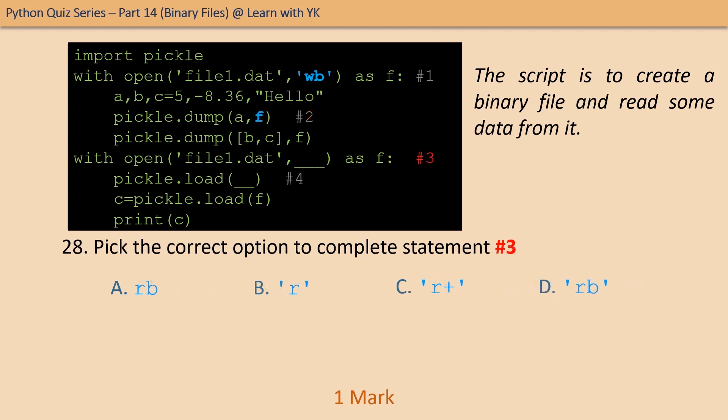Question number twenty-eight: pick the correct option to complete statement number three. The correct option is rb — because we have created the file and written data into it, now we have to read data from the file, so the file has to be opened in read mode.